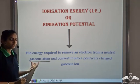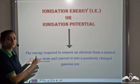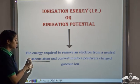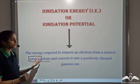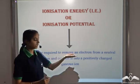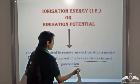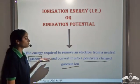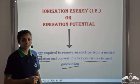We talk of a gaseous atom because we want to say that the atom is isolated. In liquids or solids, it is associated with some other atoms, so we do not consider those. To specify that the atom is isolated, we say the energy is required to remove an electron from a neutral gaseous atom. Since we remove an electron, it converts into a positively charged gaseous ion. This energy is known as the ionization energy.